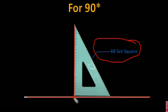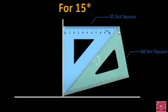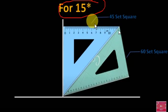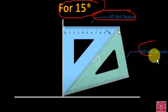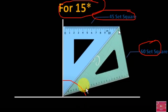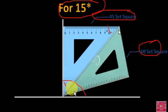Now let us see how to construct an angle of 15 degrees. To construct an angle of 15 degrees, you have to take both the 45-degree set square and the 60-degree set square. First, place the 45-degree set square — here it is 45 degrees and here it is 45 degrees. Then, below the 45-degree set square, attach the 60-degree set square as seen on the screen.